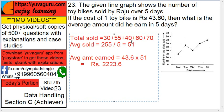The average toy bikes sold is 51. The cost of one toy bike is ₹43.60. So the average amount earned is 51 × 43.60, which equals ₹2,200.